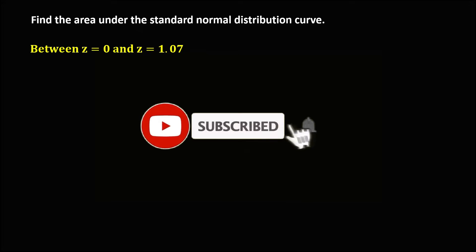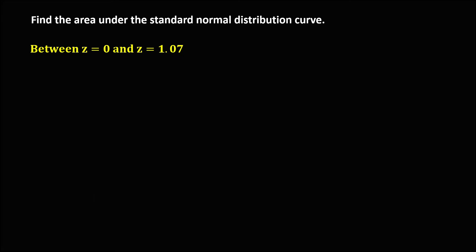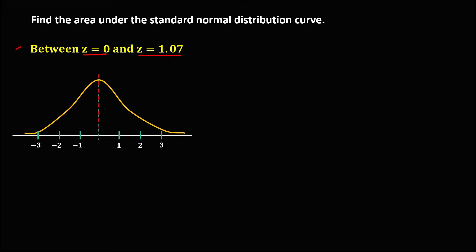Let's solve this problem. To find the area under the standard normal distribution curve, for this given: find the area between z equals 0 and z equals positive 1.07. In a normal curve, this is z equals 0, and we assume this is positive 1.07. To find this area between 0 and positive 1.07, since the area for z equals 0 is 0.